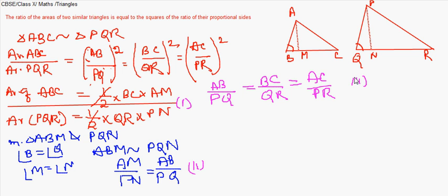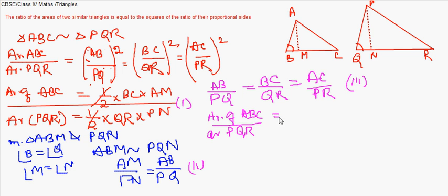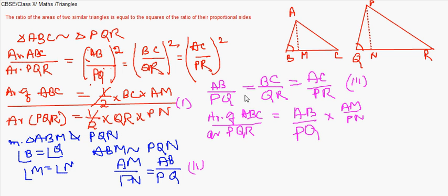Let us call these equations 1, 2, and 3. Area of ABC by area of PQR equals BC/QR — this is equation 1. I can replace BC/QR with AB/PQ from equation 2, so area of ABC by area of PQR equals (AB/PQ) × (AM/PN).